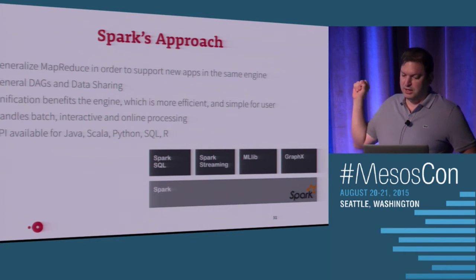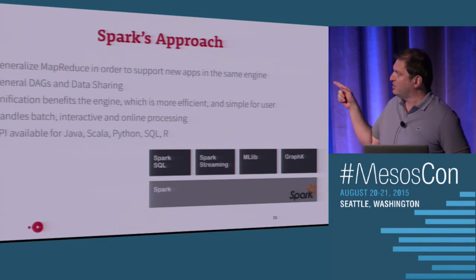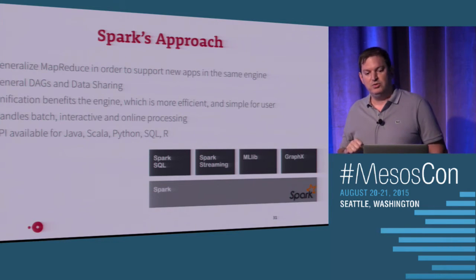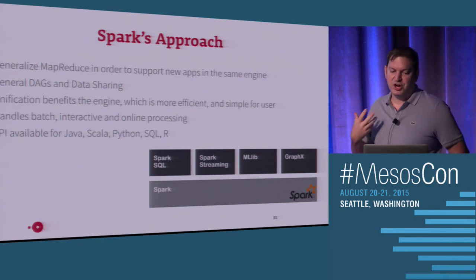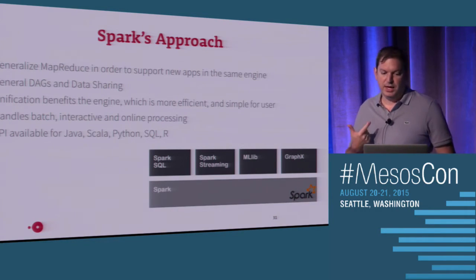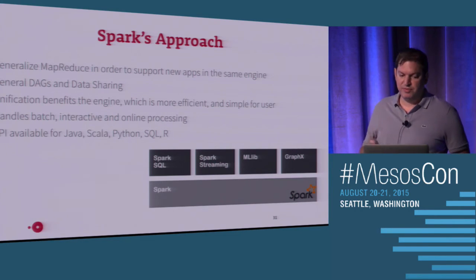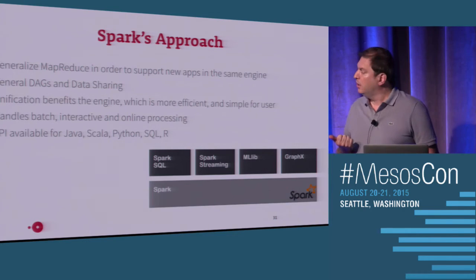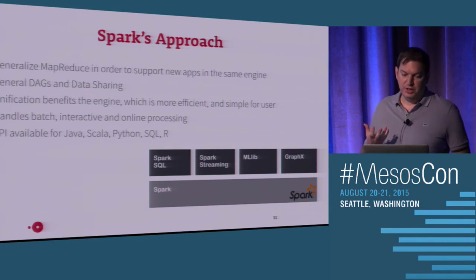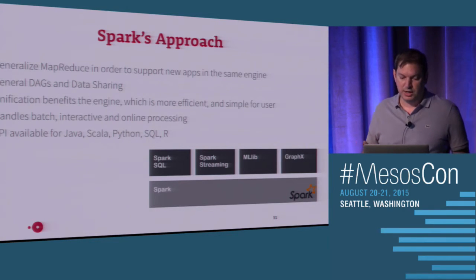Matei Zaharia, the guy who started Spark, started it as the first sample framework for Mesos. They introduced a generalized way of treating MapReduce computations by providing a general directed acyclic graph. They provide bindings for many languages: Java, Scala, Python, SQL, and R. They also treat all modes of computation within the same framework: batch processing, interactive processing, and online processing.